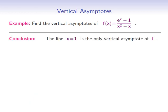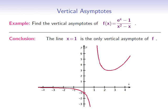Our conclusion is that the line x equals 1 is the only vertical asymptote of f. Looking at the graph, we can see clearly that the line x equals 1 is a vertical asymptote. However, even though the function f is undefined at x equals 0, there is a hole in the graph and no vertical asymptote there, since the limits from the left and from the right at x equals 0 are not equal to positive or negative infinity.